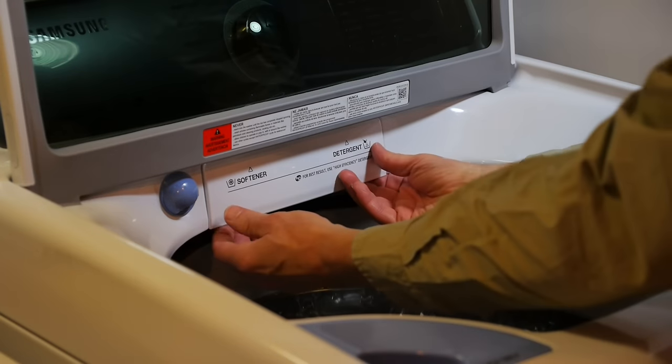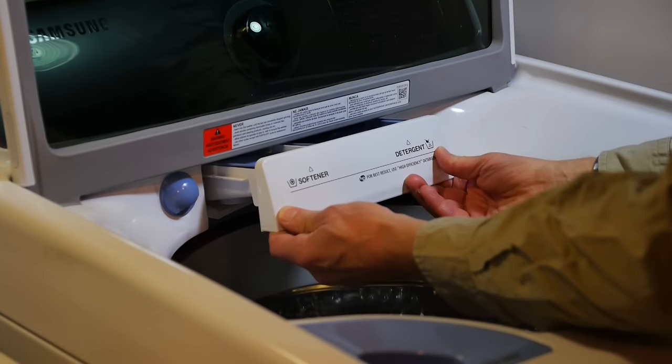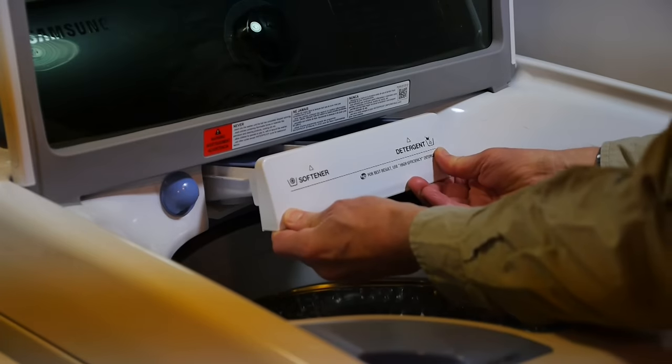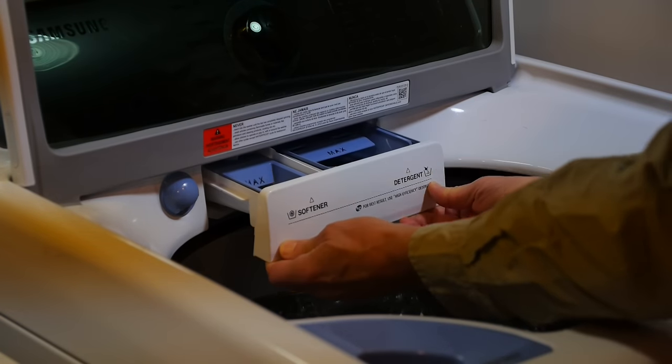The manual says pull the drawer straight forward, tilt it up, and then remove it. Once you remove it, then you can take out the plastic inserts.